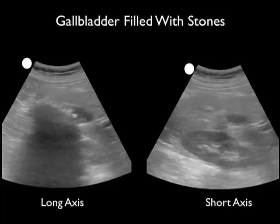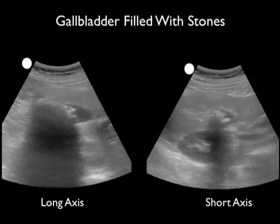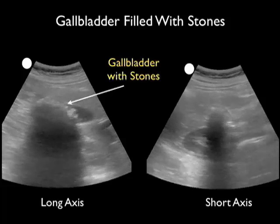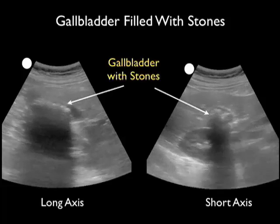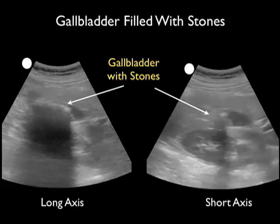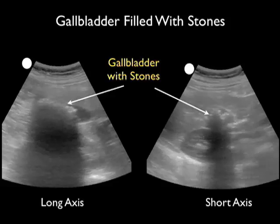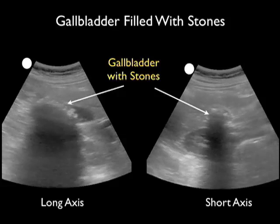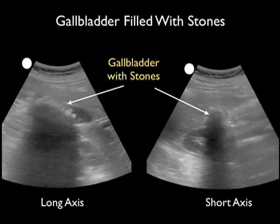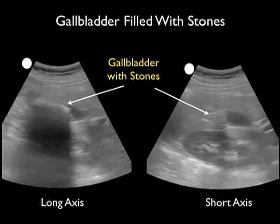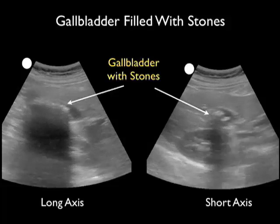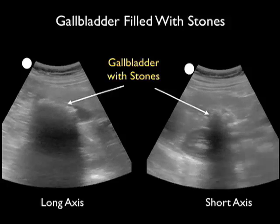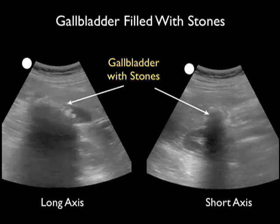A sonographic finding seen with a gallbladder completely filled with stones in a contracted state is the wall echo sign. Here we see an example of the wall echo sign in long axis on the left and short axis view on the right. What we see is the gallbladder filled with stones — all we see is the anterior wall of the gallbladder, the echo from the concretion of stones, and the shadow off the back of the stones making the sign. The wall echo sign is pathognomonic for a gallbladder completely packed with stones in a contracted state, and it can occasionally be difficult to find the gallbladder when all you see is this sign.